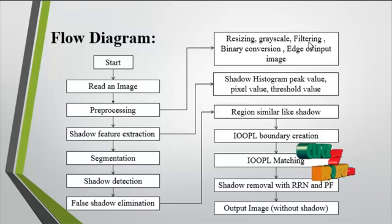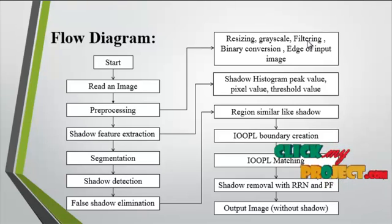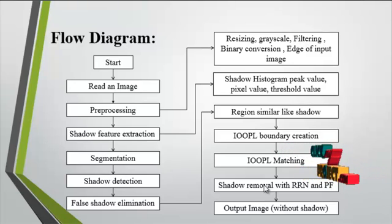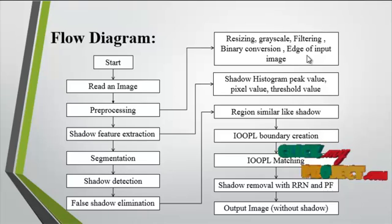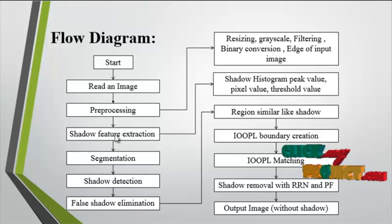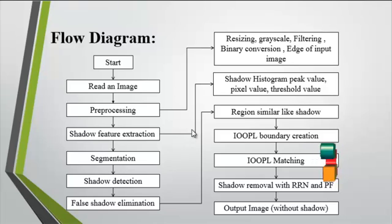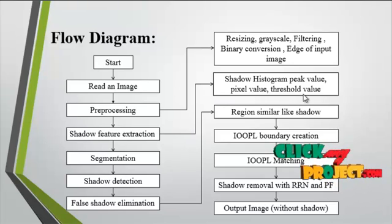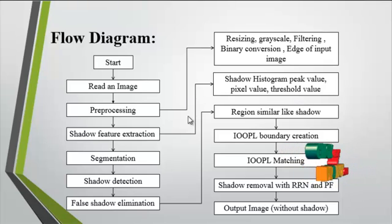Then filtering is undertaken using the Gaussian filter, which removes noise from the image. Then edge detection is carried out using the Canny edge method. After preprocessing, shadow feature extraction is carried out, where the shadow histogram peak value, level, and threshold value are gathered from the preprocessed image.